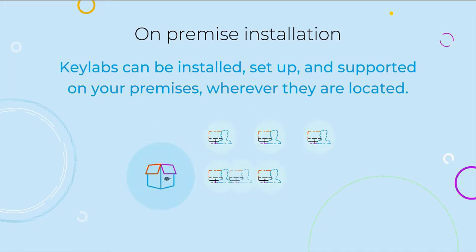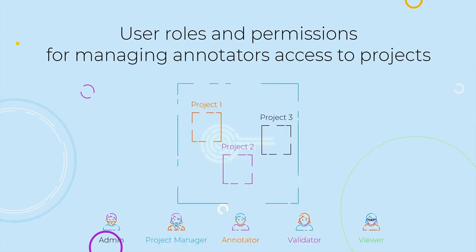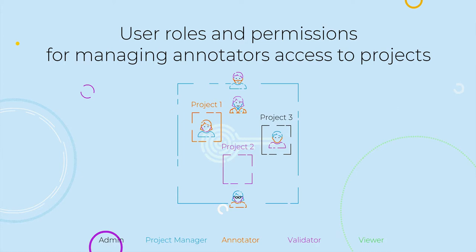Keylabs can be installed, set up, and supported on your premises wherever they are located. You can assign user roles and permissions for each individual project or platform access in general. User roles include Annotator, Project Manager, Viewer, Super User, and Admin.